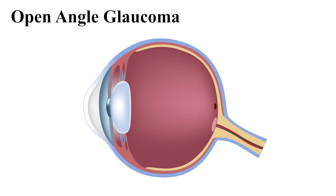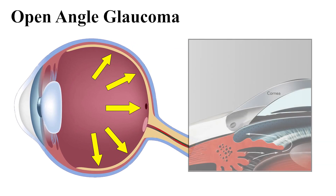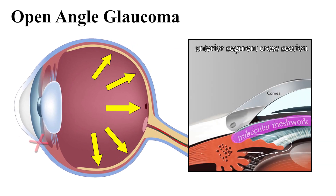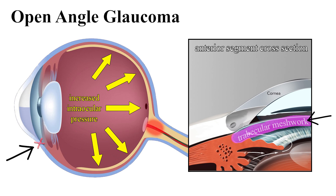Before getting into it, let me refresh you on what open-angle glaucoma is, the form of glaucoma we'll be talking about today. In open-angle glaucoma, fluid pressure in your eye builds as a result of one of the drainage canals called the trabecular meshwork being blocked. The trabecular meshwork is located right here, on the edge of the anterior segment. When this drainage canal is blocked, your eye doesn't stop producing fluid, and thus pressure builds, which can eventually lead to damage of your optic nerve.